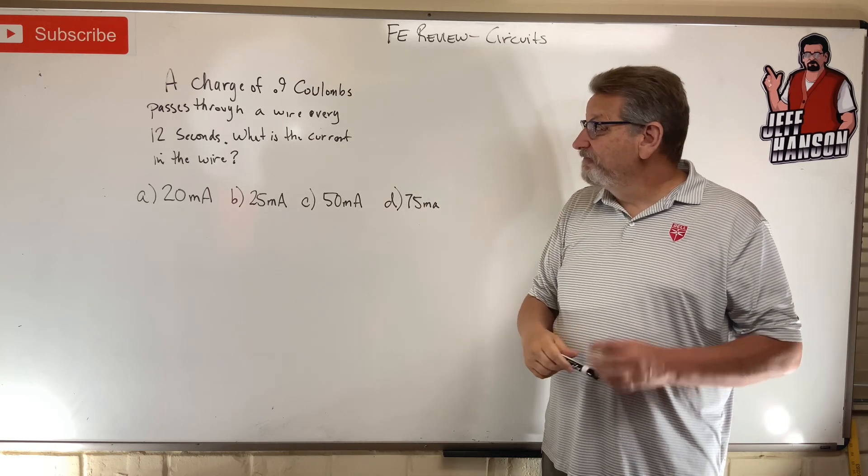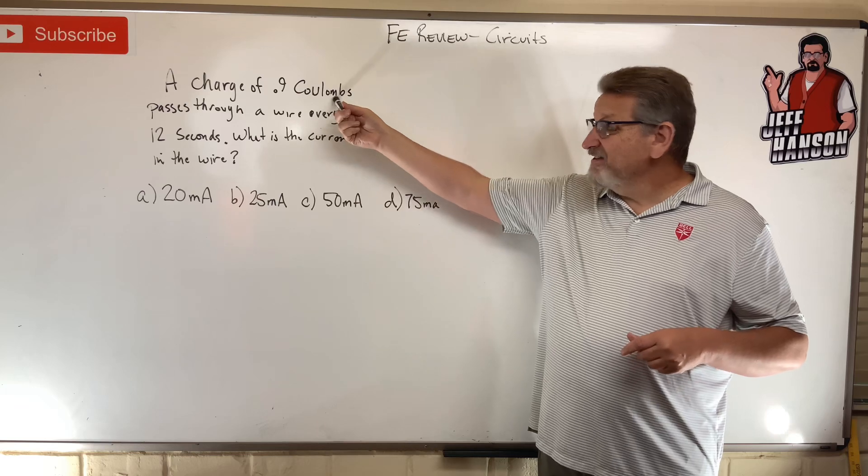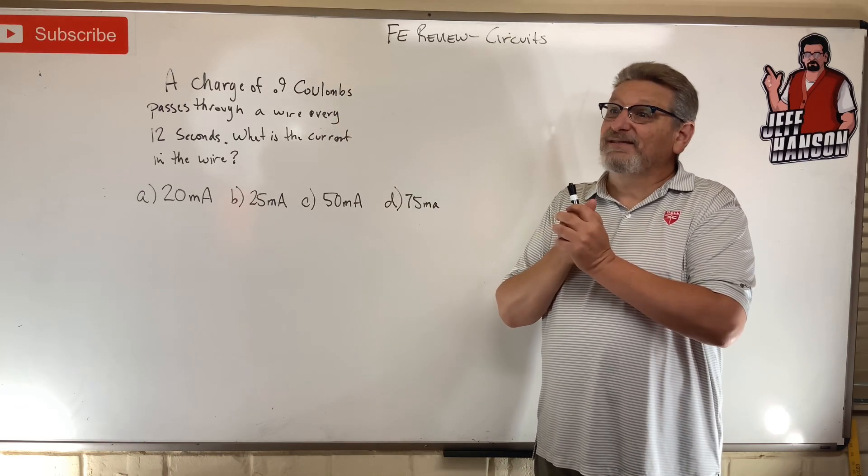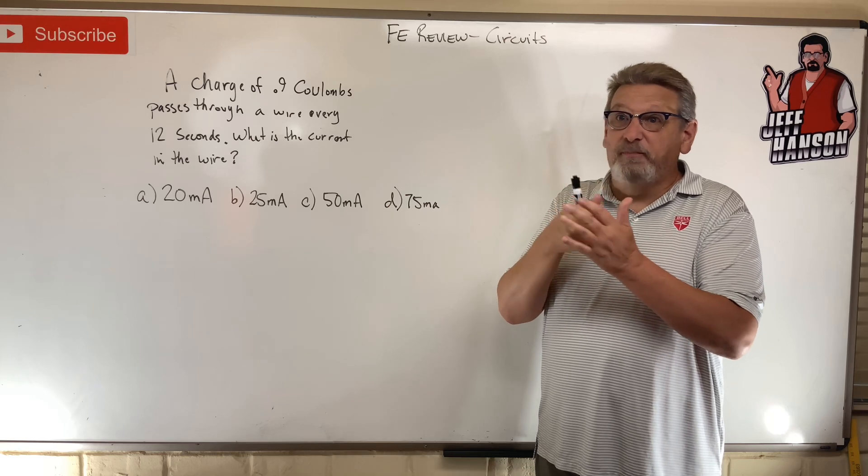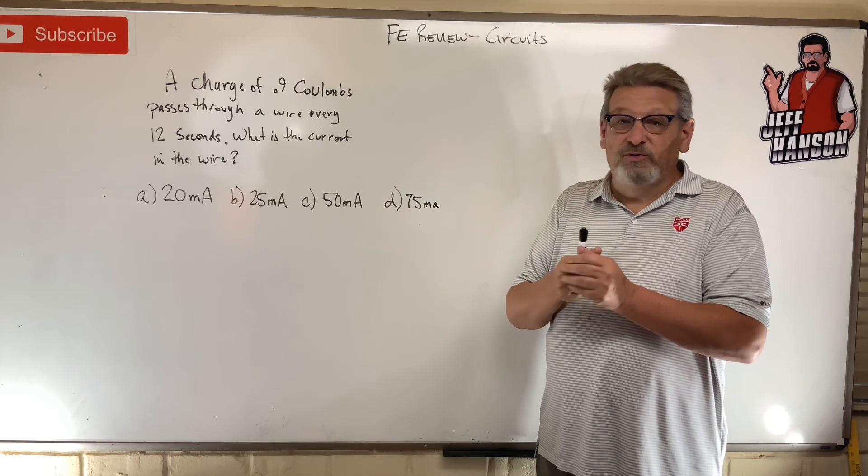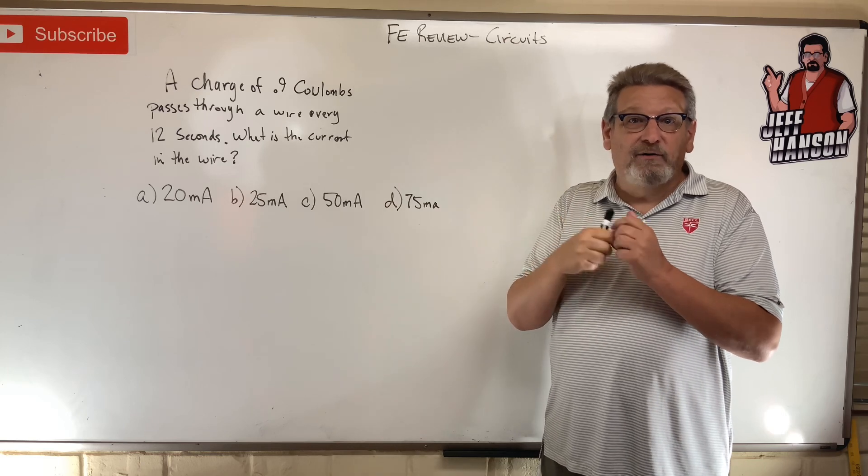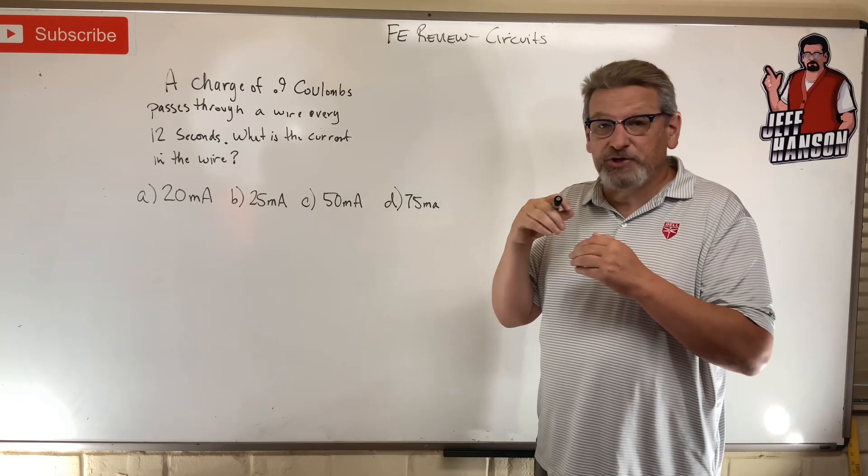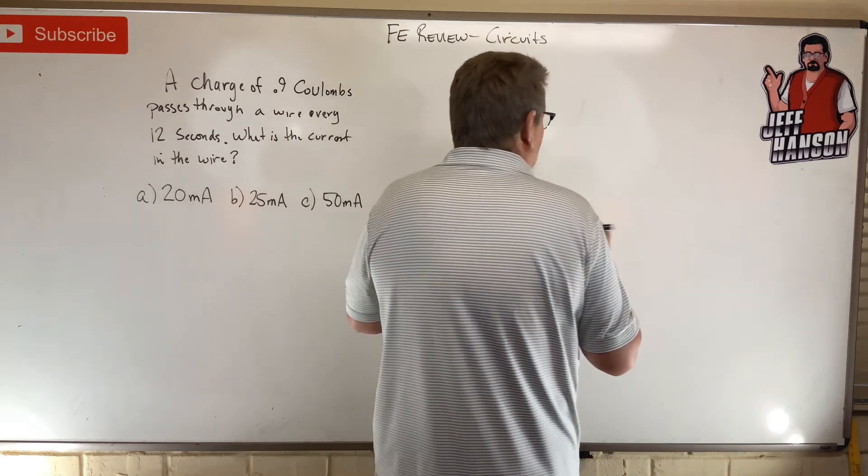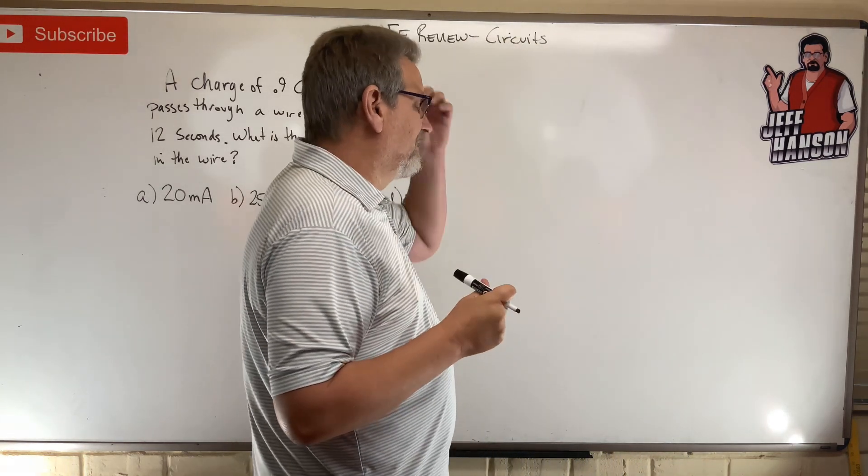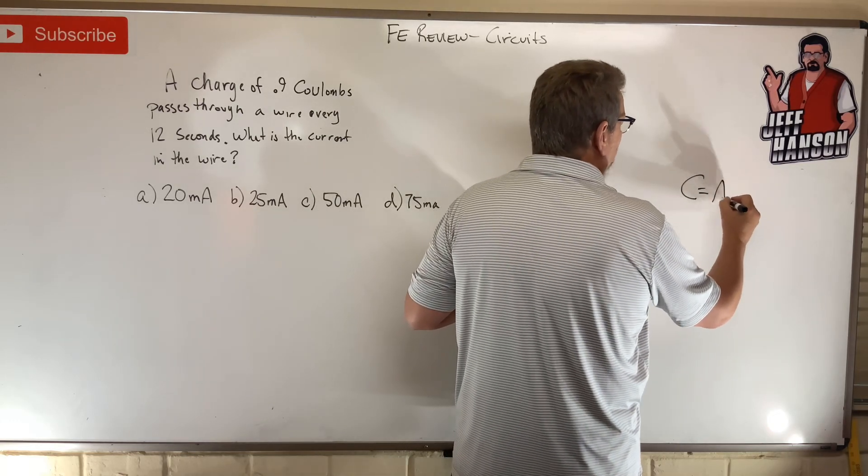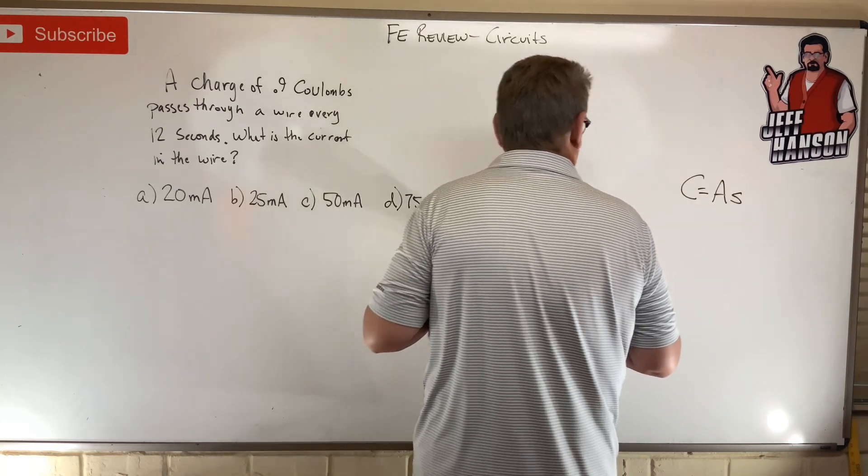Alright, are you back? Here we go. What the heck is a coulomb? Remember, a coulomb is current times time. It's how much current goes through a wire in a second. It's an amp times a second, or not per second, an amp times second. So a coulomb is an ampere-second.